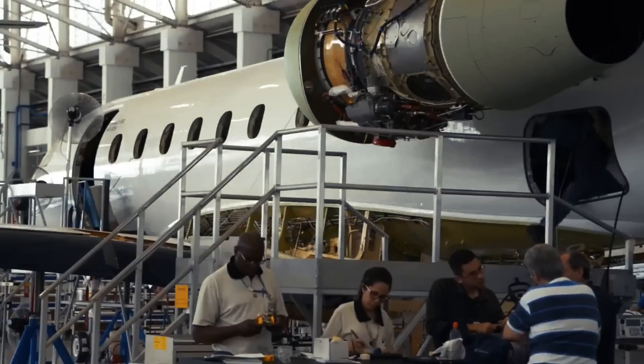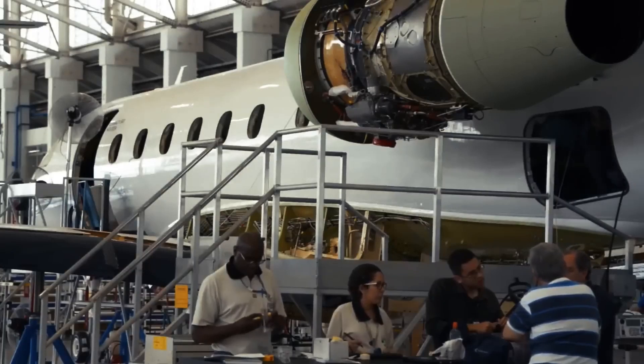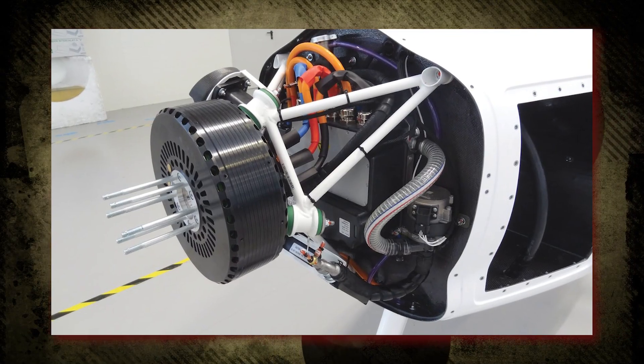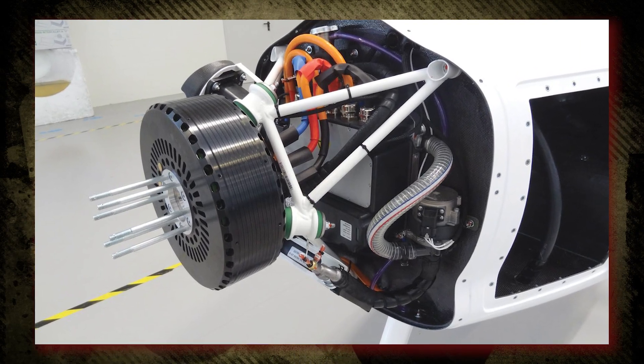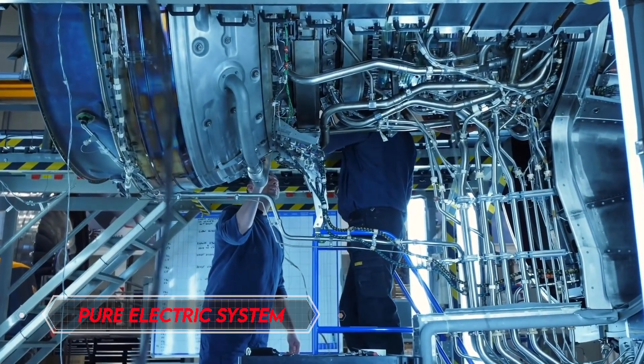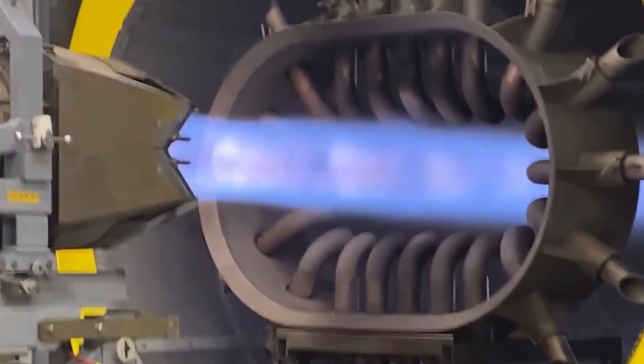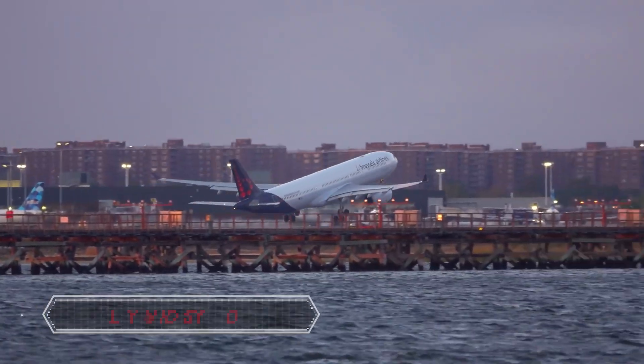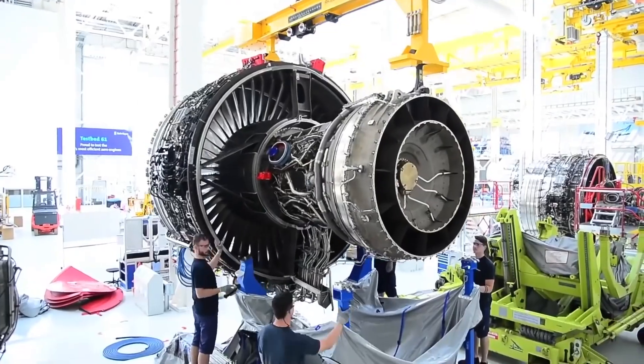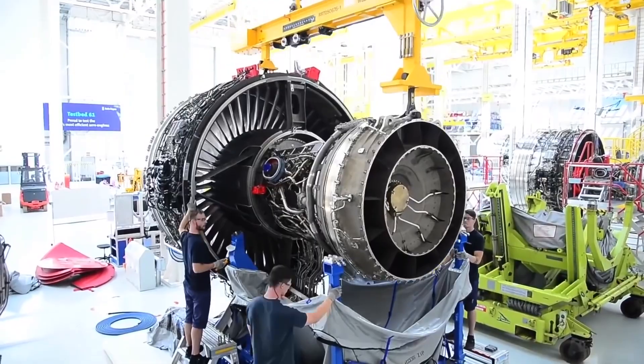This big shift is pushing aviation researchers and airplane makers to focus on making electric motors. There are two main ways to do this. One way is the pure electric system, where only electric motors are used for power. This could almost get rid of the gases coming out of the engines. The other way is the hybrid system, which is like a mix of a regular jet engine and an electric motor. This hybrid system tries to balance good performance with being better for the environment.